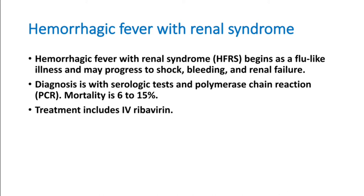One of the common presentations of hantavirus is hemorrhagic fever with renal syndrome. It starts with fever, progressive shock, multi-organ dysfunction, bleeding tendency, and renal failure. Diagnosis is by PCR test, which is not available everywhere and is not a standard investigation in tropical fever settings, so there is a high chance of missing this diagnosis. Treatment is by IV Ribavirin, which is the drug of choice in hemorrhagic fever with renal syndrome.